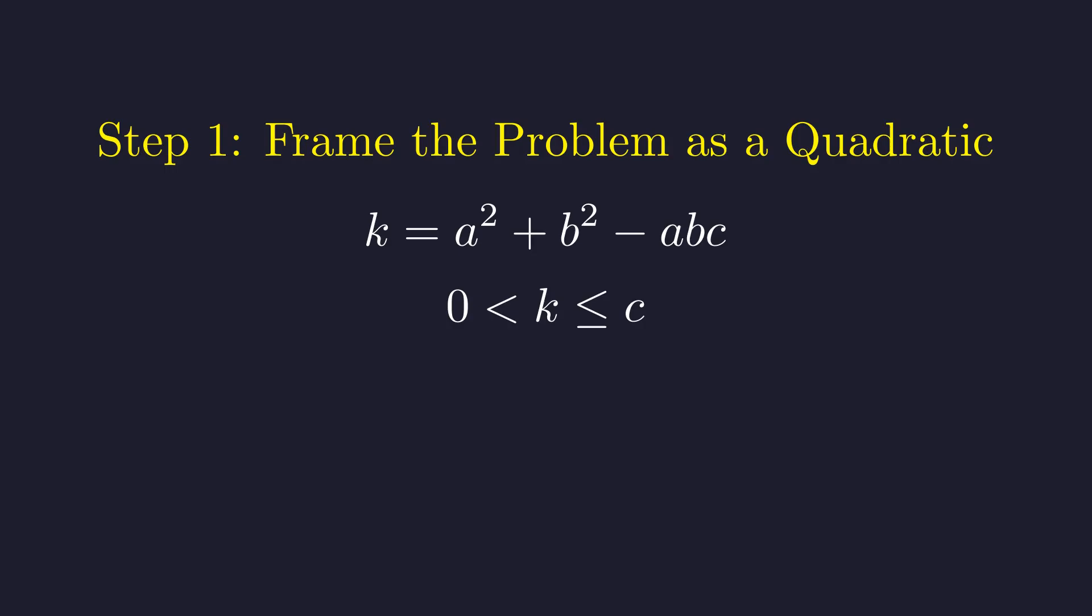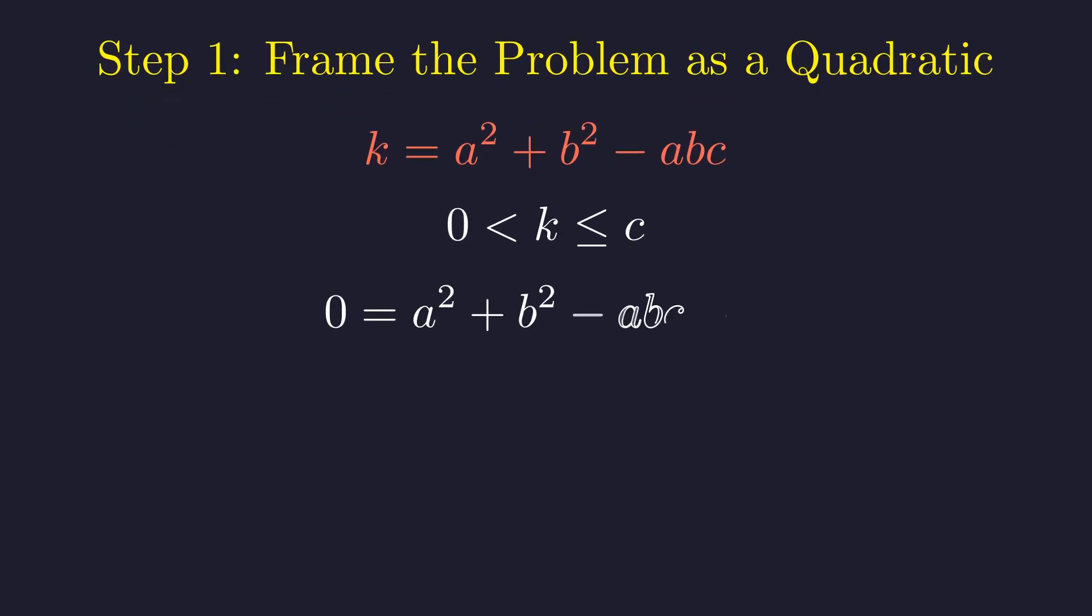From our constraint, we know k is a positive integer that's at most c. Now here's where the magic happens. To reveal the quadratic structure, we set this equal to zero by subtracting k from both sides. This gives us zero on the left side. Now let's group the terms on the right by powers of a.